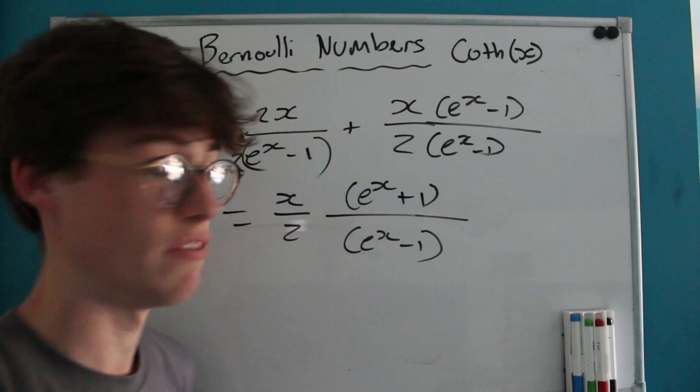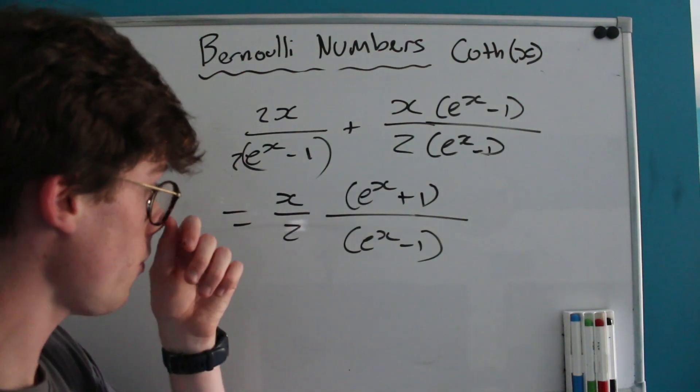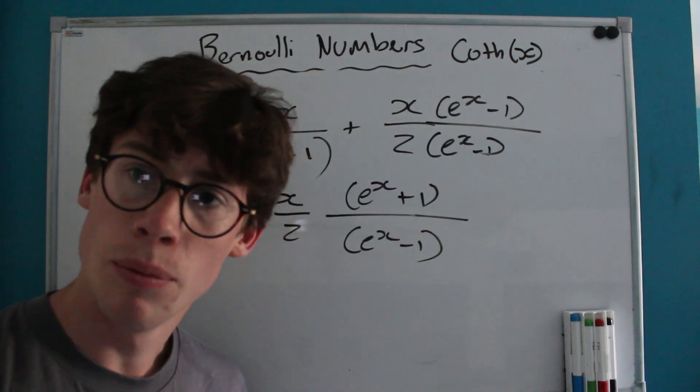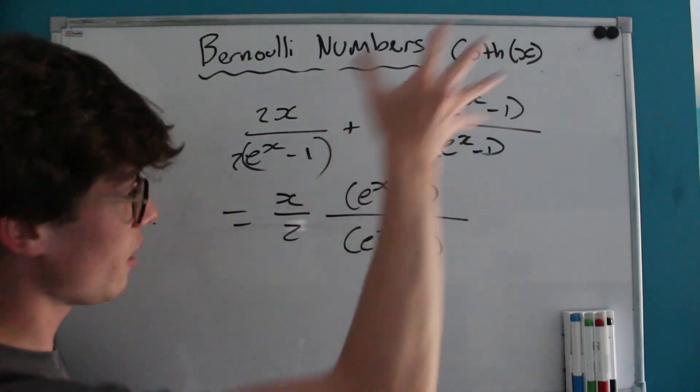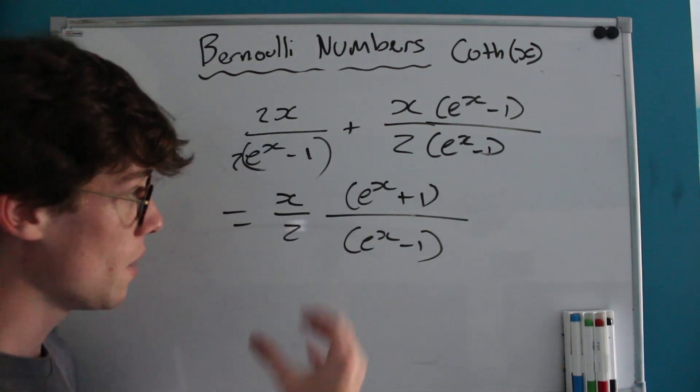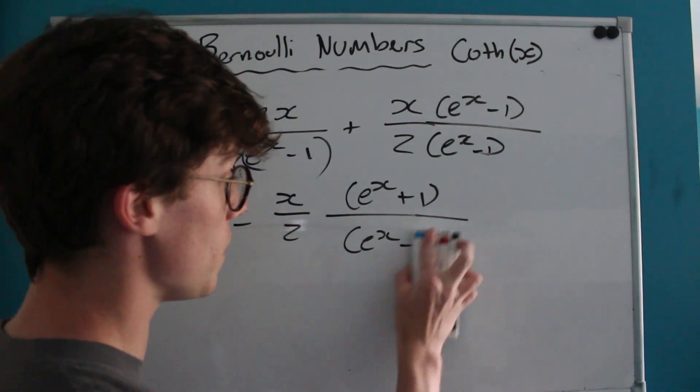This already is starting to look like we're getting into hyperbolic territory when we have these e^X plus something and e^X minus something. But we're going to solidify that by multiplying on the top and the bottom here by e^(-X/2).